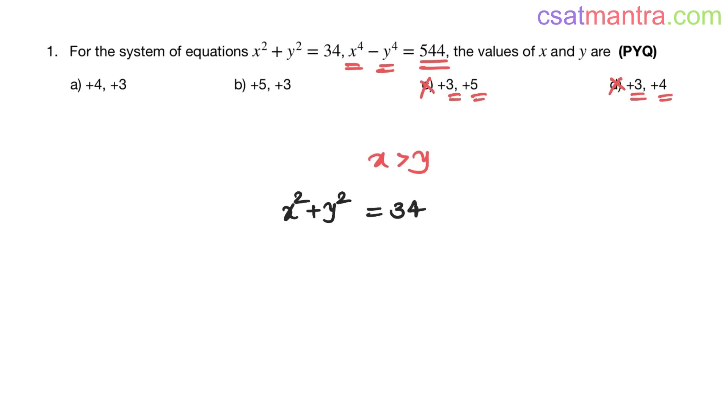Option A: 4² + 3² = 16 + 9 which is 25. So option A is not the answer.